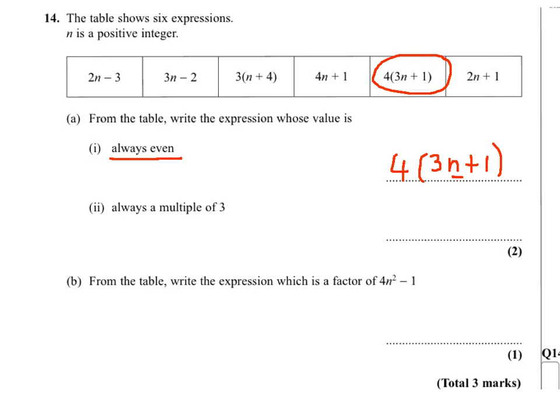Now a multiple of 3 — if I look at this expression, 3(n+4) is always in the 3 times table, so it would be a multiple of 3. So that's another expression.